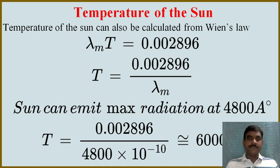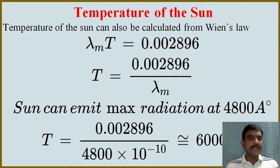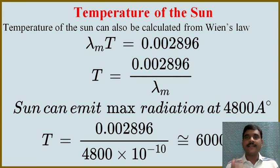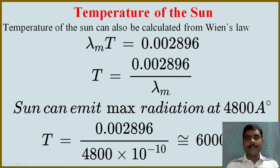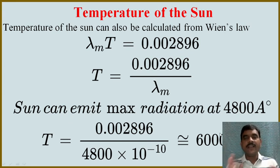After conducting several experiments on the solar spectrum and electromagnetic spectrum, it is observed that the sun emits maximum energy at a wavelength of 4800 angstroms, which lies in the visible region. The sun emits different amounts of energy at different wavelengths, but at one particular wavelength it emits maximum energy — that is λm = 4800 angstroms. Using the formula T = 0.002896 / λm, and substituting 4800 angstroms (4800 × 10⁻¹⁰ meters), we get approximately 6000 Kelvin.